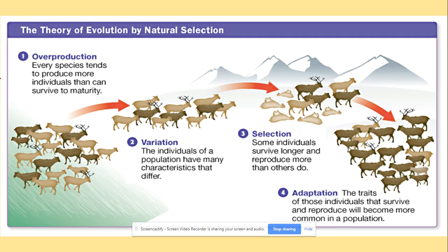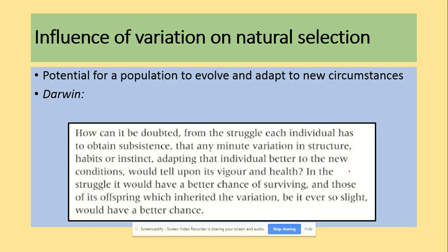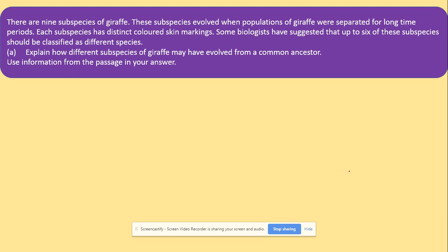To summarize: overpopulation leads to variation among individuals, which causes selection - only the more advantageous alleles will be passed on. The variation in phenotype means that more advantageous individuals will reproduce, produce fertile offspring, and increase the frequency of the advantageous allele. This allows the population to evolve and adapt to new conditions, demonstrating the influence of variation on natural selection.